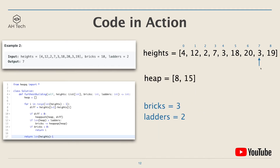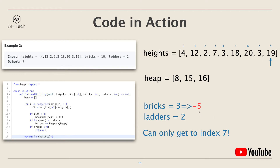At index 7 it is a negative height difference. At index 8, the height difference is 16, so we add it into the heap and pop the smallest difference which is 8. But now bricks become negative 5 after the subtraction, meaning we don't have enough bricks to reach building 8. So we can only reach index 7. The output is 7, and this concludes the algorithm.